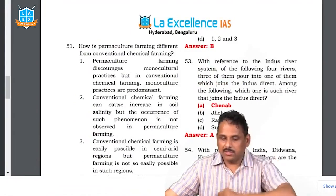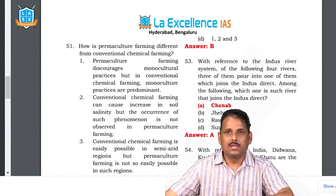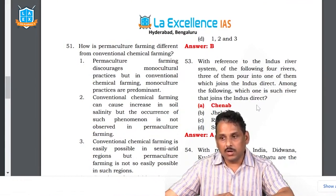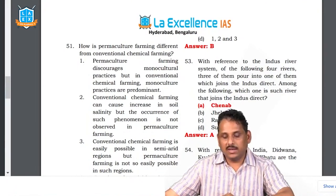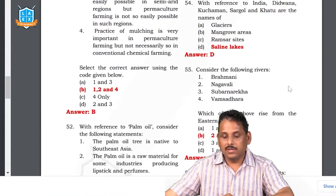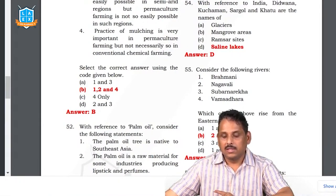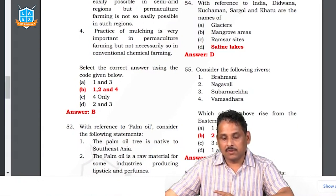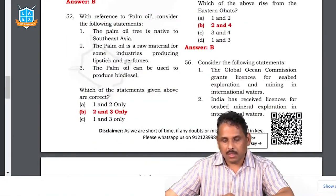Question 53: with reference to the Indus River — this question became a debate. The answer finally arrived at is Chenab: the Sutlej joins into Chenab, and Chenab joins into the Indus River. Question 54: Didwana, Kuchaman, Sargol, and Kathu are names of saline lakes. Question 55: which rivers arise from the Eastern Ghats? Brahmani and Subarnarekha are not arising from the Eastern Ghats — they flow towards that side. The answer is two and four.